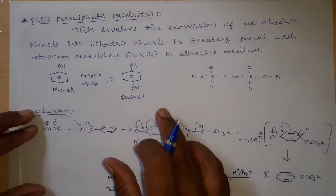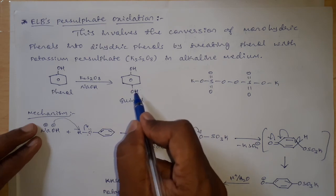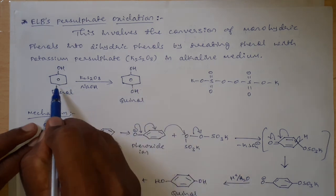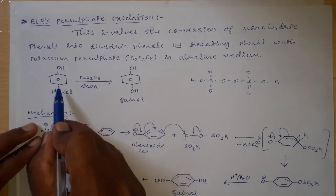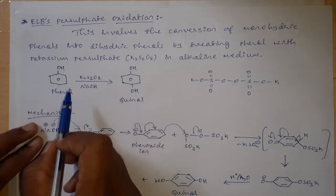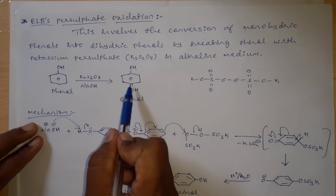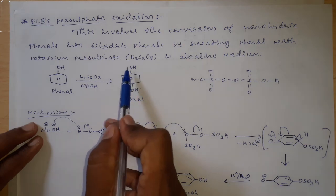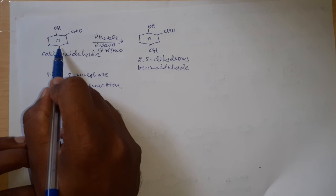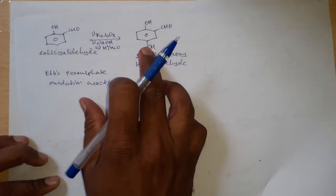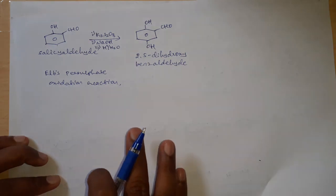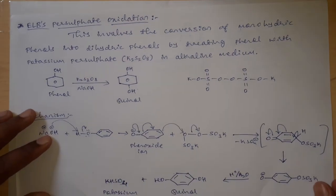One important point to remember: the addition of the OH group, that is hydroxylation, takes place only at the para position with respect to the original OH group. If the para position is blocked by another substituent, then hydroxylation will take place at the ortho position. In both examples shown, the new OH is added at the para carbon.